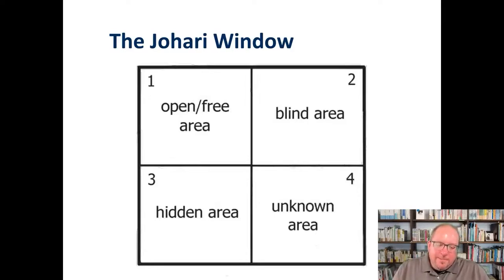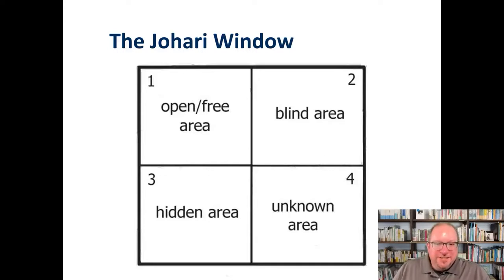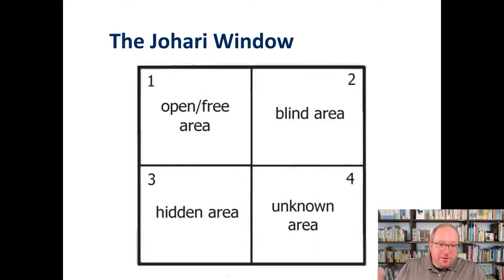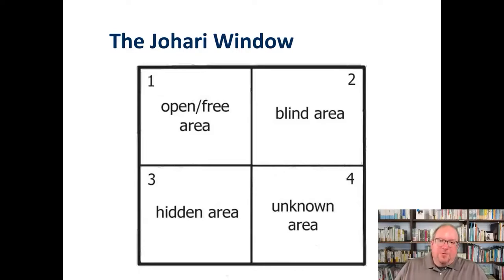The blind area — the second box — consists of things other people see about you that you don't see about yourself. If you asked my wife, I'd have all kinds of information in the blind area. She would tell you I get irritated quickly — maybe I don't think I do, but she sees that. It doesn't take long for me to get frustrated, which is why she handles conversations with salespeople and I just hang up. Other people may also see a talent or key characteristic in you that you don't recognize in yourself. That's the blind area — others see it, you do not.